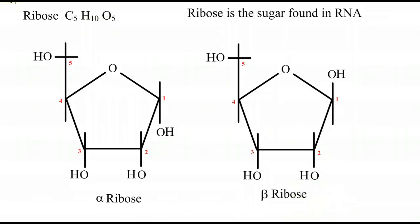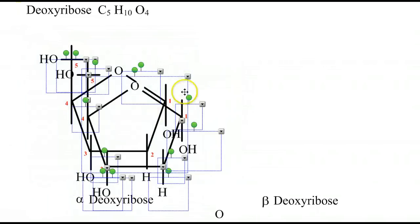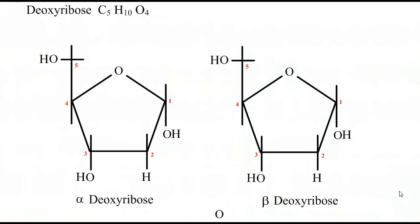Another pentose sugar you're going to see a lot in class is deoxyribose. Deoxyribose is in DNA, and as the name tells you, it's deoxygenated - we're missing an oxygen. This looks identical to alpha ribose, except we get rid of the oxygen on number two. So we're left with a hydrogen there instead of a hydroxyl. The formula, instead of being C5H10O5, is C5H10O4. We can make beta deoxyribose by raising the hydroxyl on top of the number one carbon. So there's deoxyribose.